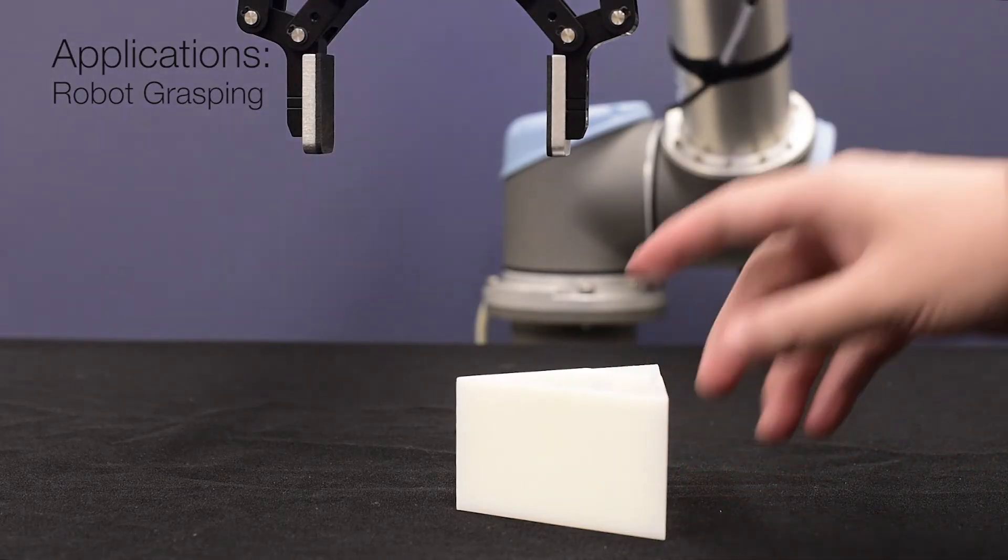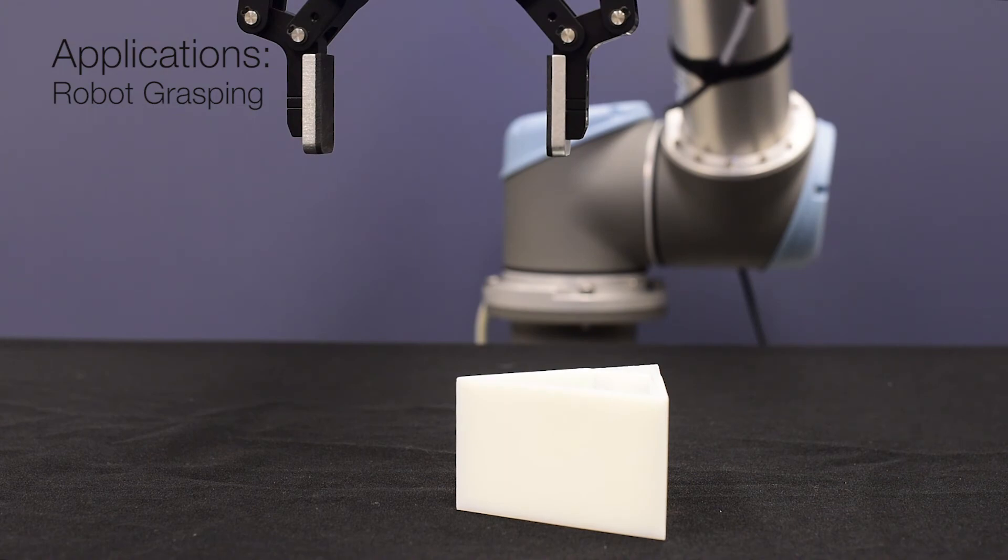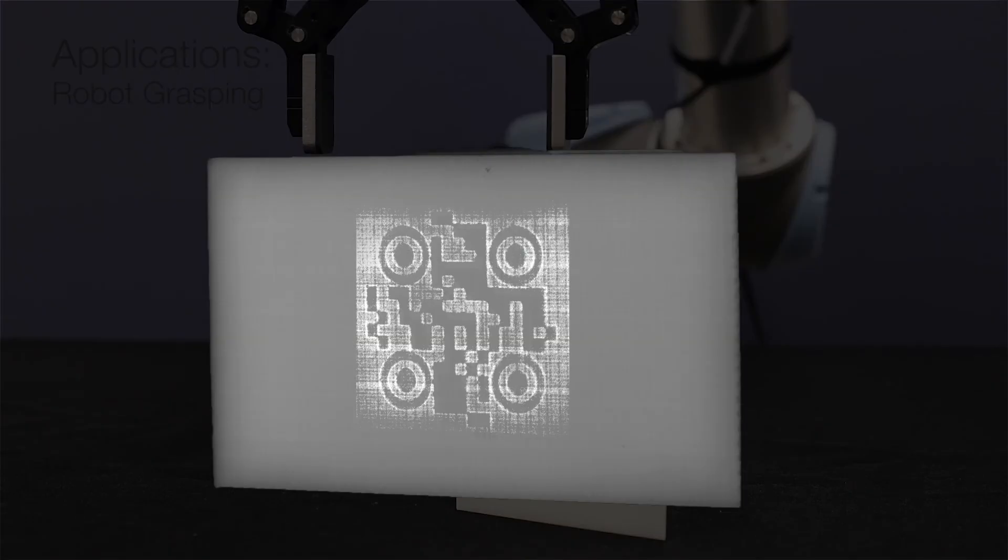In a more challenging case, where the handle is completely occluded, the robot can still recognize the object and know the handle position to succeed at grasping.